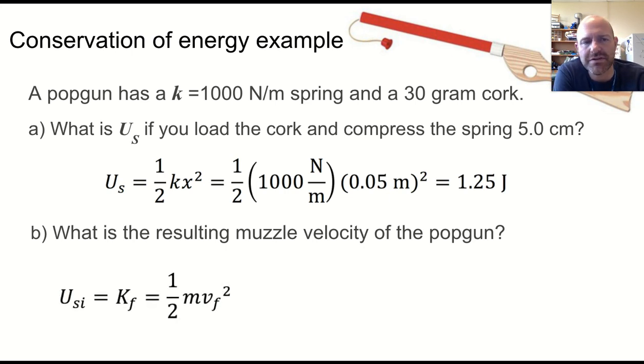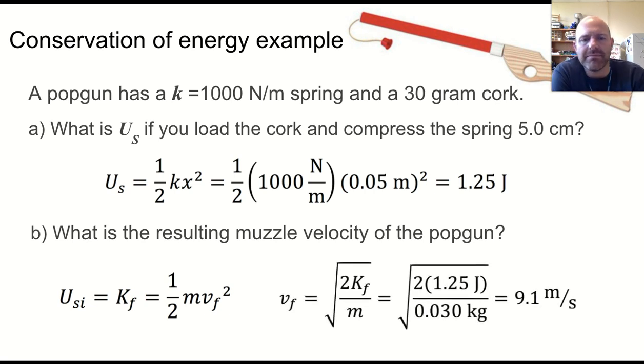But what is the resulting muzzle velocity or speed that the cork leaves the pop gun if we let it go? Well, for that, we need to do a conservation of energy problem. We start with spring potential energy. We end with kinetic energy. So we get final velocity is the kinetic energy, right, final, divided by times two divided by the mass. Well, the kinetic energy was the initial potential energy, so that's that 1.25 joules, and we get a value of about 9.1 meters per second.